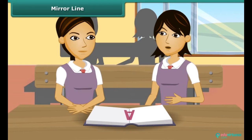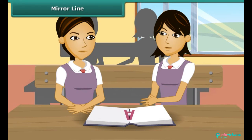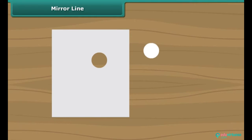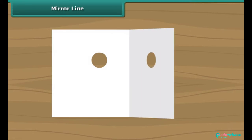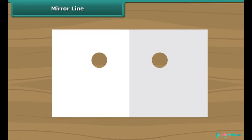Let's play a game now. Which game? The punching game! In this game, we will fold these papers and punch a hole. This is so simple. Now open these papers — we can see two holes which are symmetric. The fold is a line of symmetry.